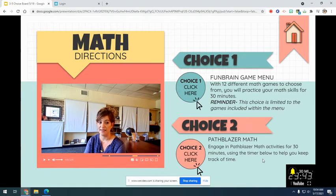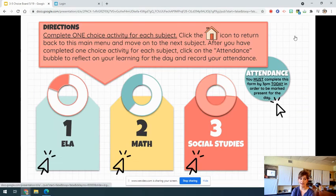After my timer goes off, which means my 30 minutes has passed from either playing the Fun Brain game menu or 30 minutes of Pathblazer Math, I can click the home icon here that will take me back to the main menu. Once I'm at the main menu, I've now completed math, so it's time to move on to social studies.